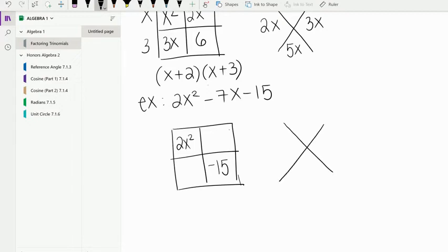Then from there, we go to our magic x. We find the product of the diagonal. So 2x squared times negative 15 is negative 30x squared. We take the middle term, which is negative 7x, and place that at the bottom.